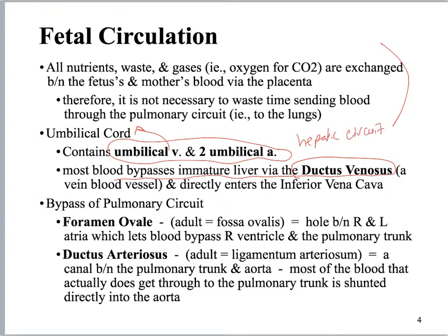On the pulmonary circuit we've got two structures: foramen ovale and ductus arteriosus. You need to know the adult name, the fetal name, and what it does in the fetus — so memorize that. You will definitely have questions on this on the quiz and the midterm.